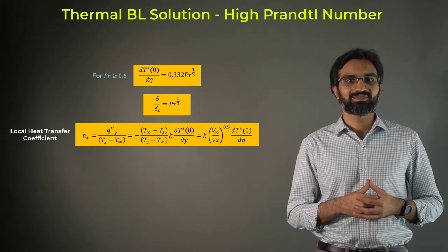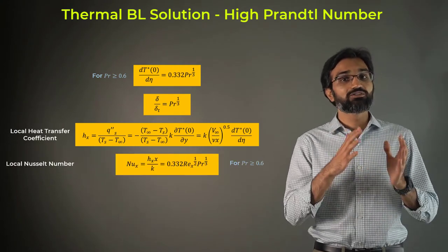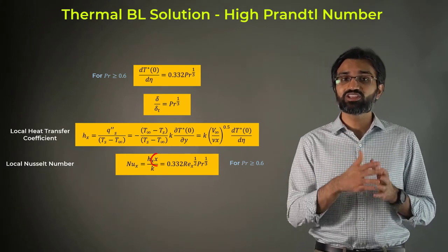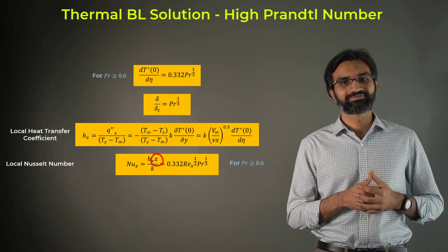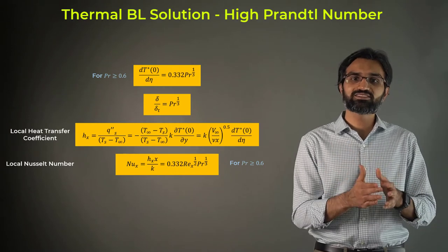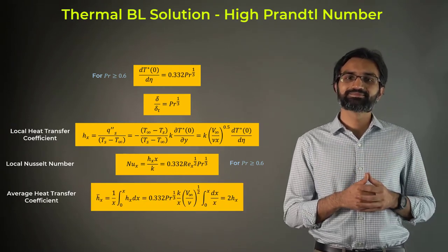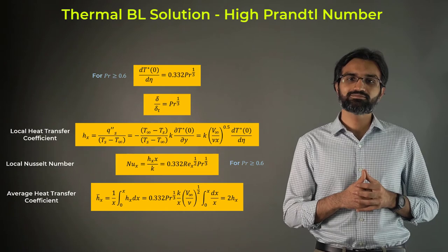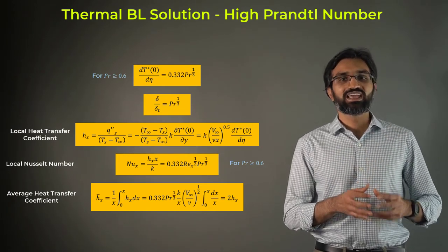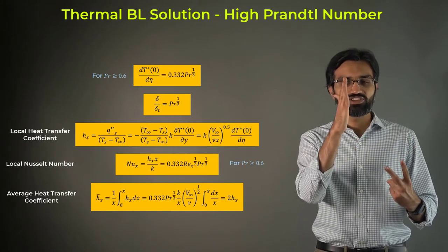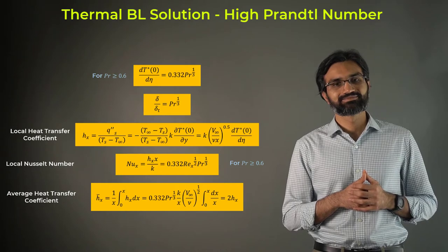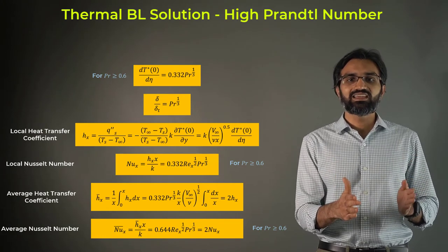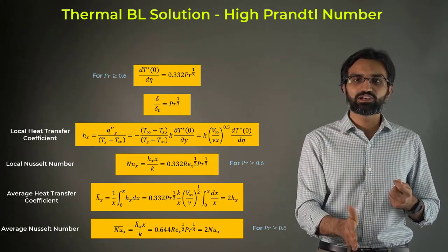Rewriting this in terms of the Nusselt number, we obtain the following relationship for fluids with Prandtl number greater than or equal to 0.6. This relationship is a function of x and is dependent on the length of the plate. Assuming that we know the length of the laminar boundary layer region x, we can integrate the local heat transfer coefficient along the plate to obtain the average value. It is observed that the average heat transfer coefficient is exactly twice the local heat transfer coefficient at any given length x. Similarly, an average Nusselt number over a specified length L is twice the local Nusselt number at a specific location L.